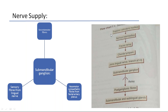Like the parotid gland, the submandibular gland has secretomotor fibers from the parasympathetic ganglion, sensory fibers from the lingual nerve, and vasomotor supply from sympathetic fibers. In the parotid that is the inferior salivatory nucleus, but in the submandibular it is the superior salivatory nucleus. From the superior salivatory nucleus, fibers travel via the nervus intermedius, facial nerve, chorda tympani, which joins the lingual nerve branch of the trigeminal, forming the submandibular ganglion. From the submandibular ganglion, postganglionic fibers supply the submandibular and sublingual glands.